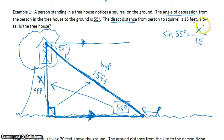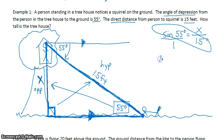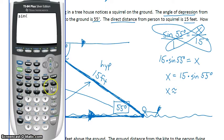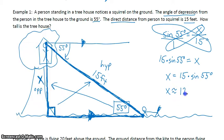Solving for x: x is inside a fraction, so I'm going to cross multiply. 15 times the sine of 55 degrees equals x. So x equals 15 times sine of 55 degrees, which is approximately 12.3. In this case, x is a length of measure — it's how high the treehouse is — so the answer is 12.3 feet.